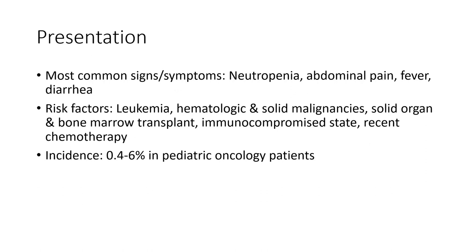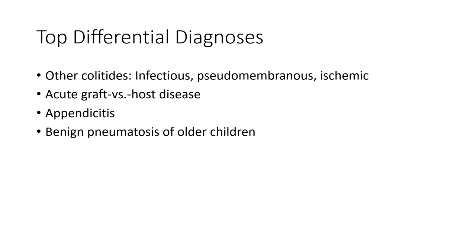Incidence: 0.4 to 6% in pediatric oncology patients, and 0.5 to 7% in adult oncology patients. Top differential diagnoses include other causes such as infectious colitis, pseudomembranous colitis, ischemic colitis, acute graft versus host disease, appendicitis, and benign pneumatosis in children.